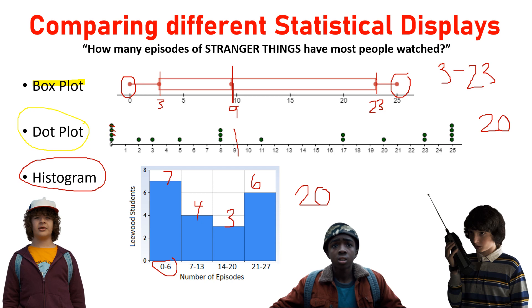One negative about the histogram is that if you look at the intervals, it's not specific. For example, looking at the last interval of twenty-one to twenty-seven, there are only twenty-five episodes of Stranger Things. So we don't know, looking at that last bar, if those individuals watched twenty-five or twenty-three episodes. You don't know the specifics — you only know they watched within that interval. Either way, those are three different ways to see this data.